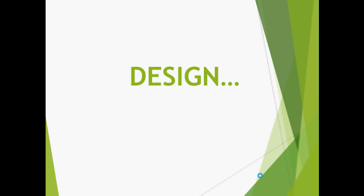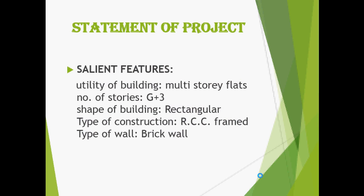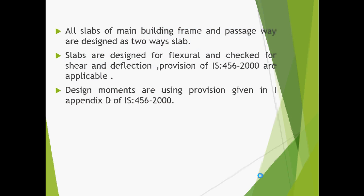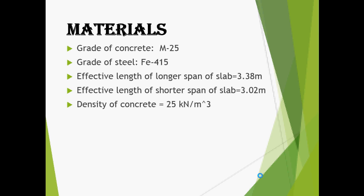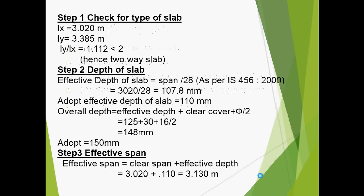Coming to the design — this is the plan showing a ground floor having four apartments. Various code books were used during the design: IS 456-2000 and IS 875 Parts 1, 2, and 3. These are the materials used for the design of the slab. We first checked whether it is a two-way slab or one-way slab, and confirmed it is a two-way slab.